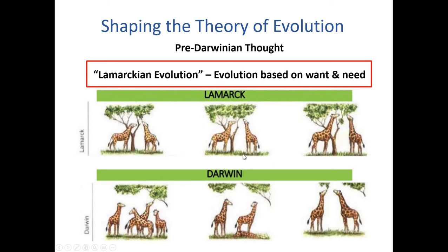He also believed in the inheritance of acquired characteristics. Here's an example: Lamarckian evolution is based on the principle of evolution based on want and need. The depiction of the evolution of a giraffe shows a horse-like creature initially, and if that creature needs to reach higher vegetation due to a changing environment, then those creatures could adapt based on need and grow a longer neck. Whereas Darwin's line of thinking is more that natural variation already exists within populations, and over time as certain species have an advantage, they'll be more likely to reproduce and pass on their genetics, changing allele frequency within a population.